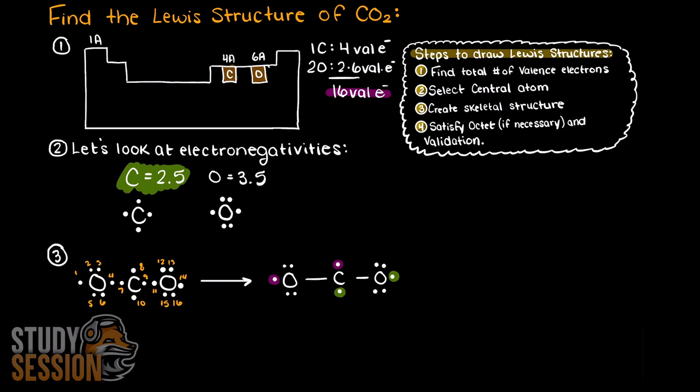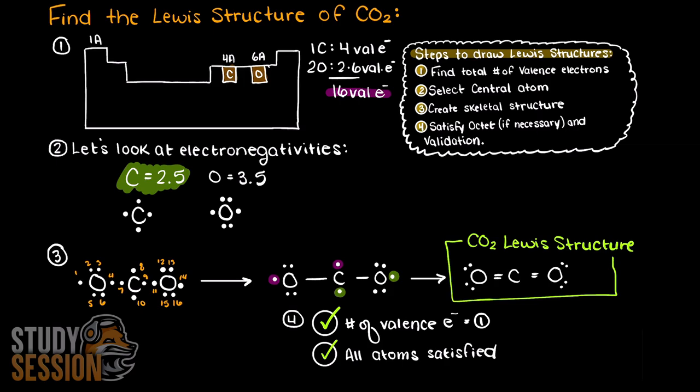Carbon dioxide's solution to this is to create double bonds with both of the oxygens. This leaves all of our electrons satisfied, as our total number of valence electrons matches step 1, and all the atoms that need to are satisfied in terms of the octet rule.